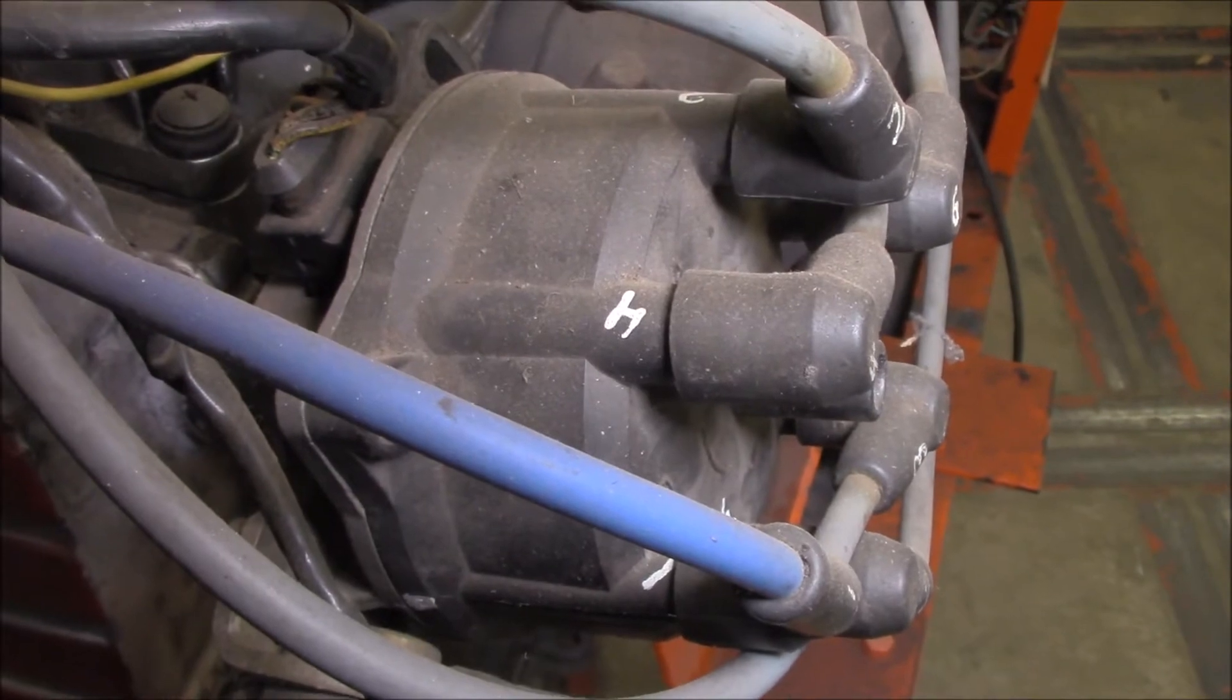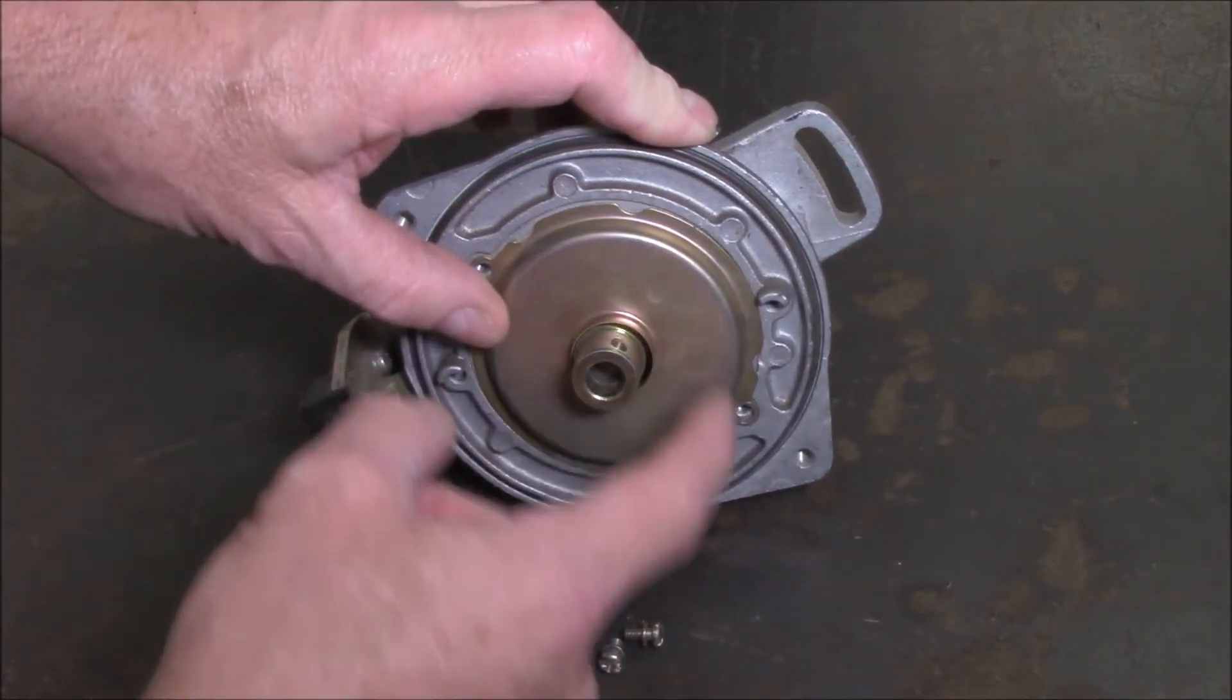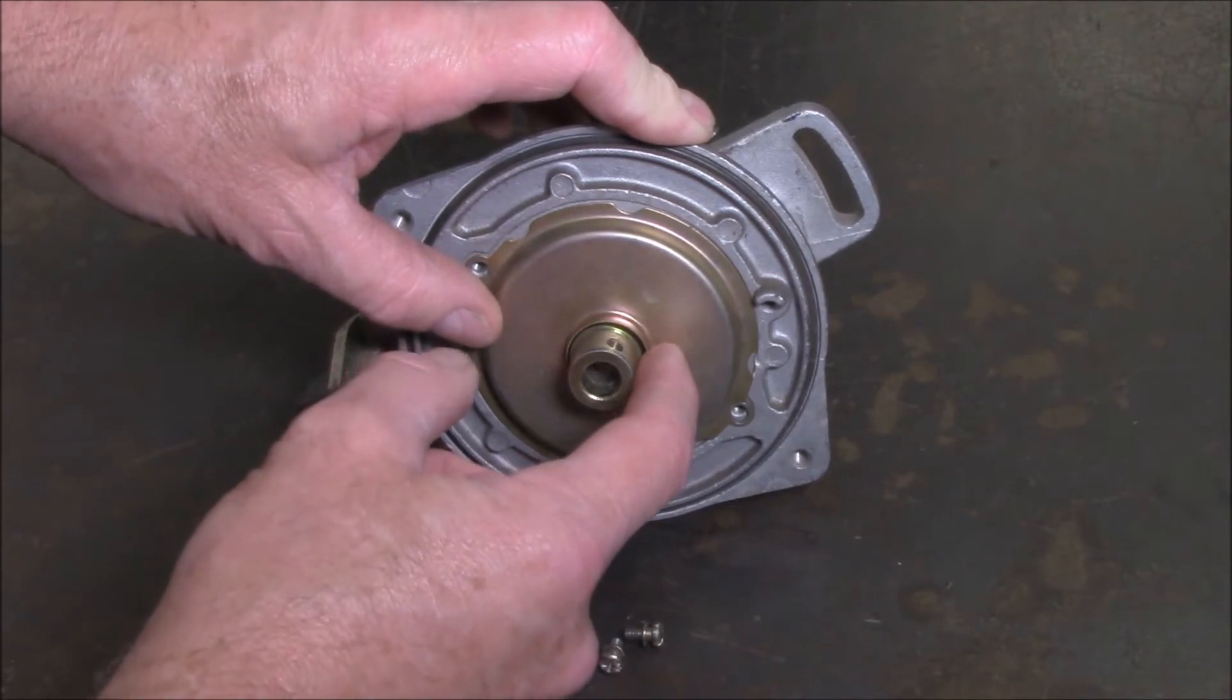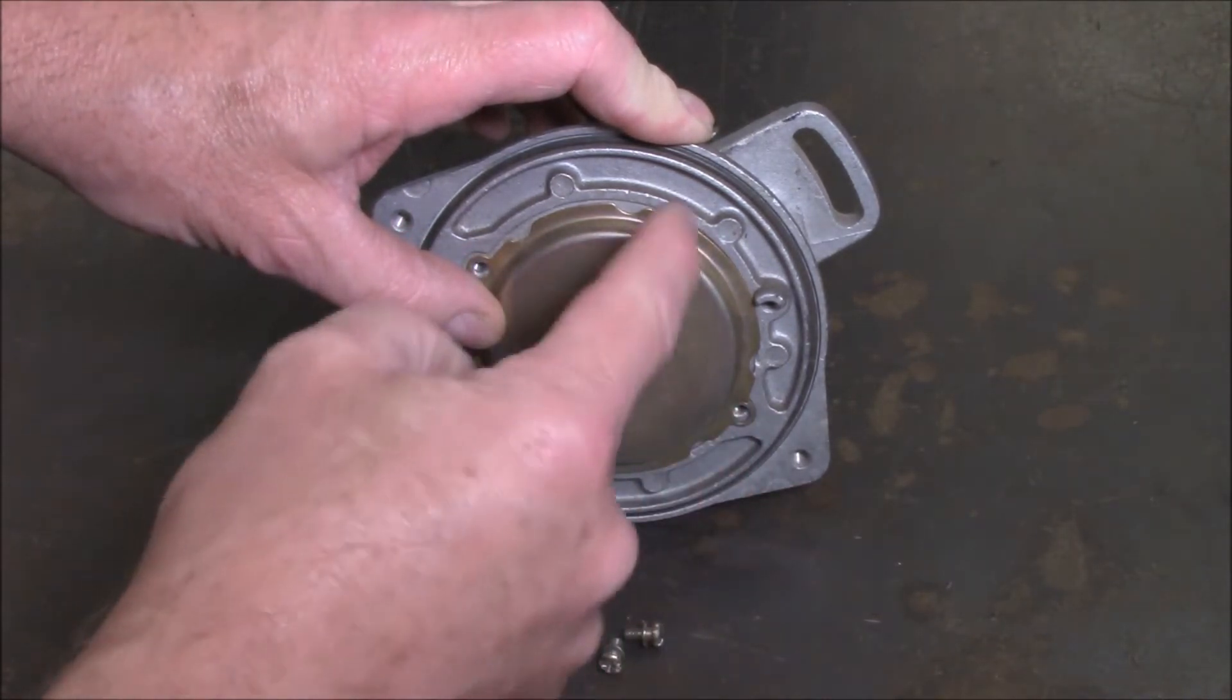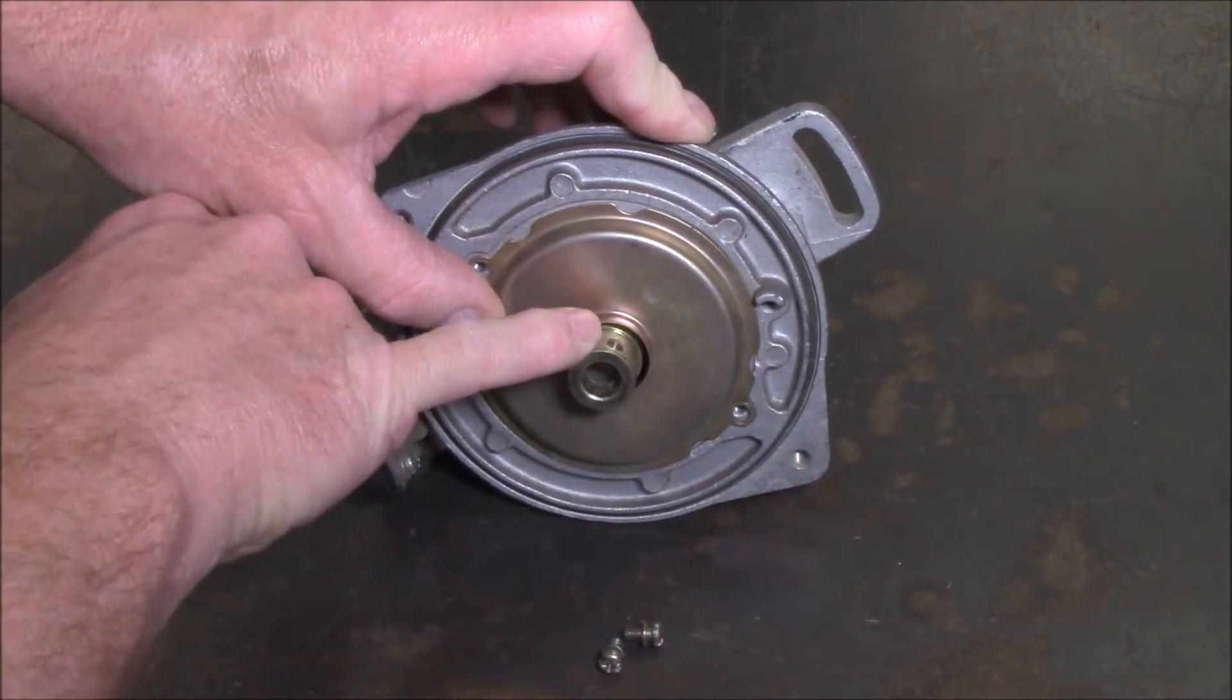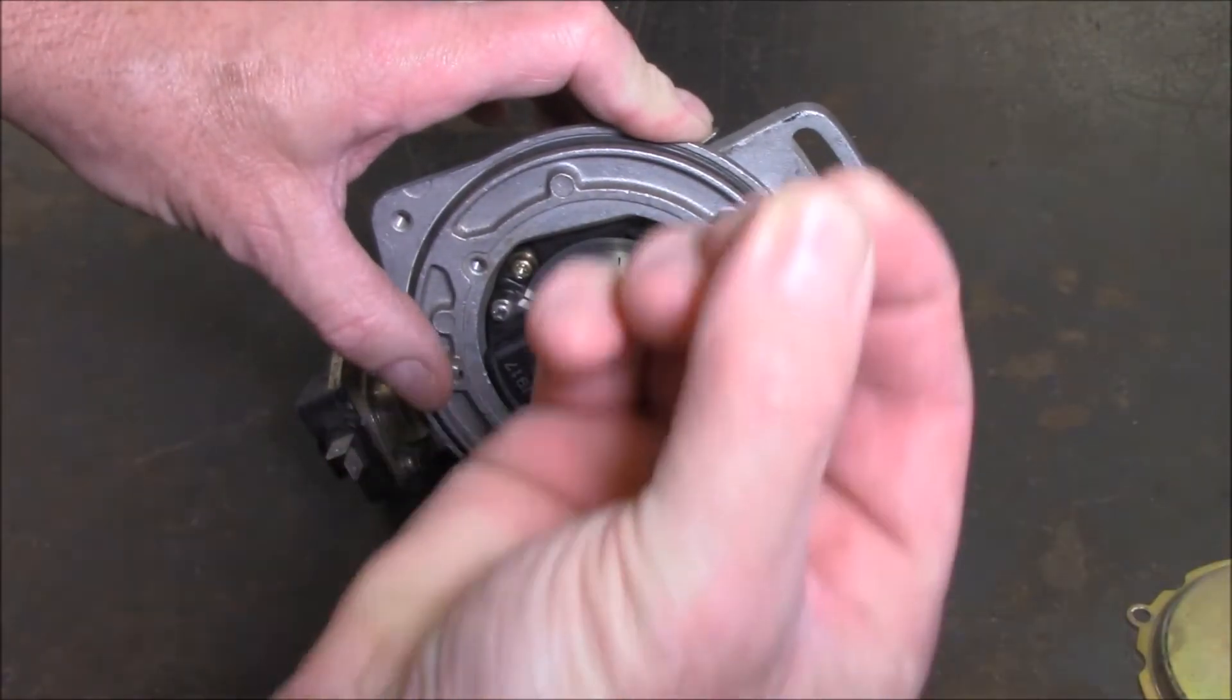So what's inside the optic pickup and how does it work? This is the distributor out of the VL Commodore. Inside there is an optical sensor which is used as a crank angle sensor. Once the rotor button is pulled off there's a bolt that needs to be taken off. This cover plate can be taken off, two screws.